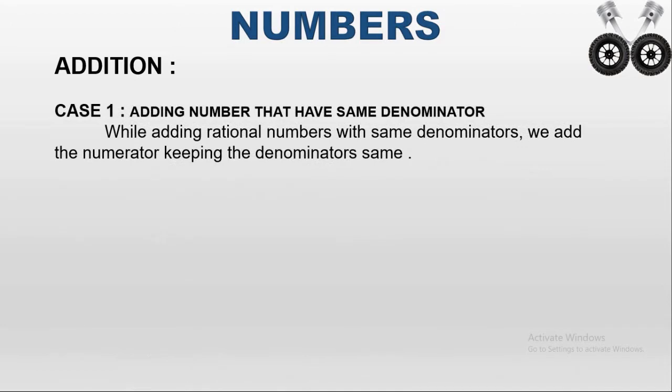In Case 1, we are adding numbers that have the same denominators. If we want to add 2 rational numbers which have the same denominator, it is very easy — we have to add only the numerators.